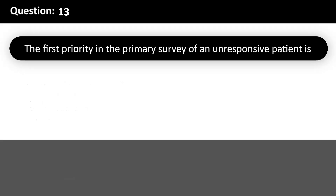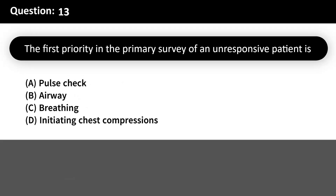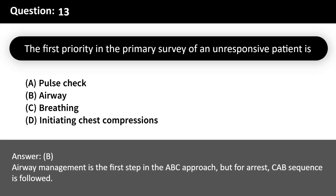The first priority in the primary survey of an unresponsive patient is: A. Pulse check. B. Airway. C. Breathing. D. Initiating chest compressions. Answer: B. Airway management is the first step in the ABC approach, but for cardiac arrest, the CAB sequence is followed.